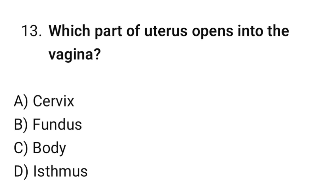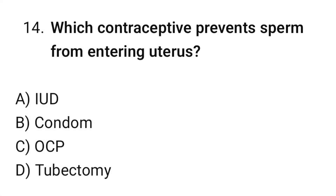Question No. 13: Which part of the uterus opens into the vagina? The correct option is A. Cervix. Question No. 14: Which contraceptive prevents sperm from entering the uterus? The correct option is B. Condom.